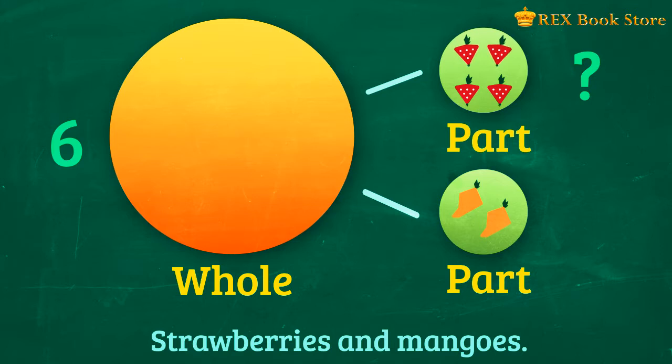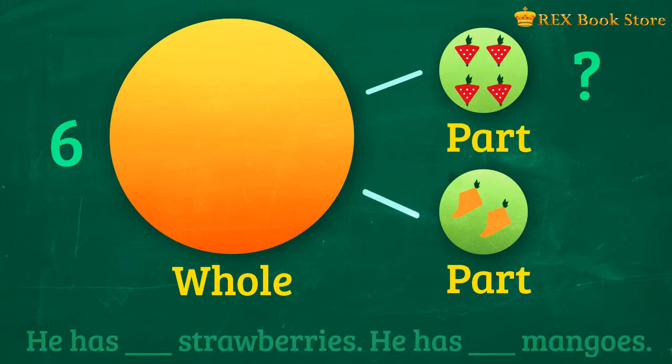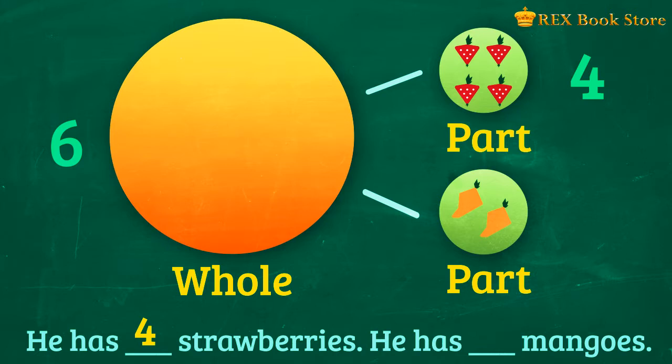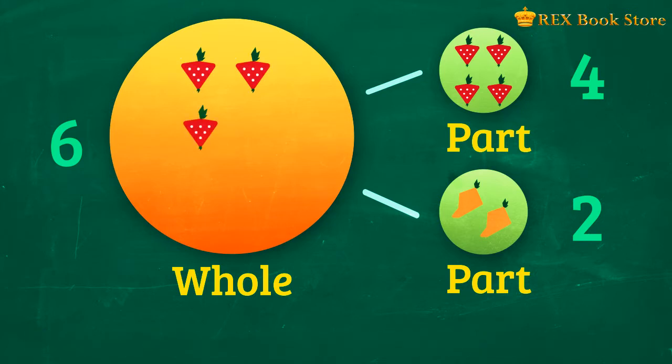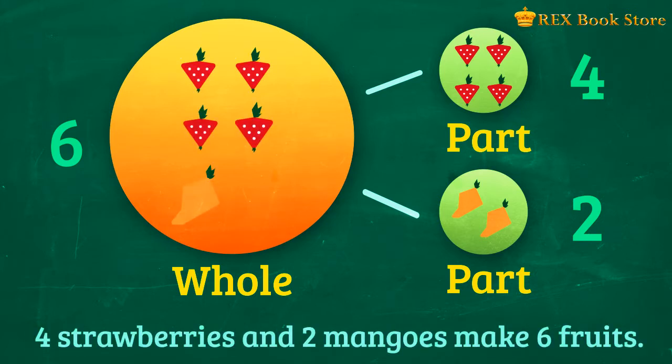1, 2, 3, 4. He has 4 strawberries. And how many mangoes does he have? Let's count them. 1, 2. He has 2 mangoes. So 4 strawberries and 2 mangoes make 6 fruits in all.